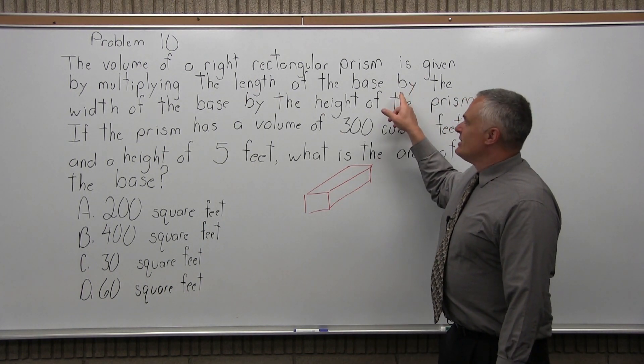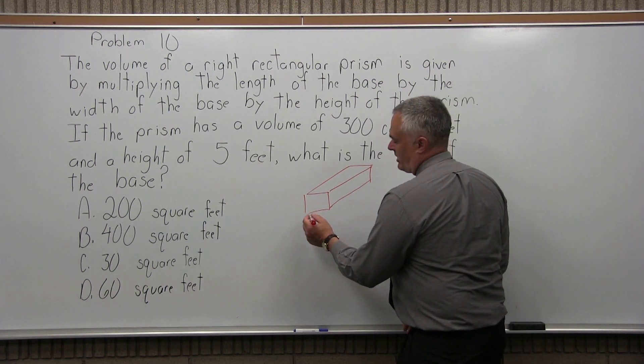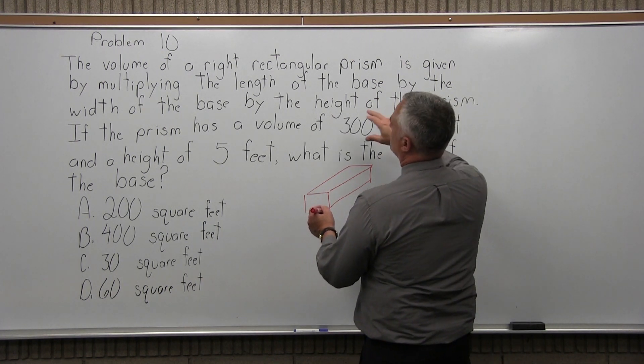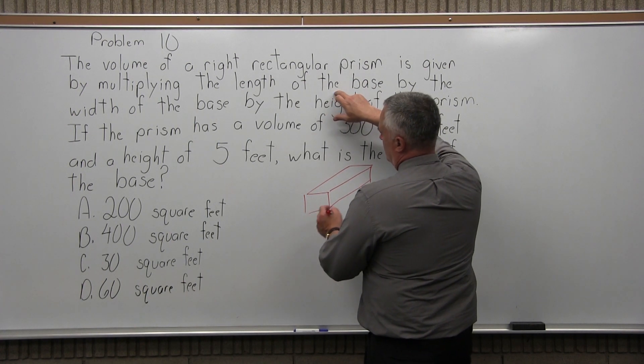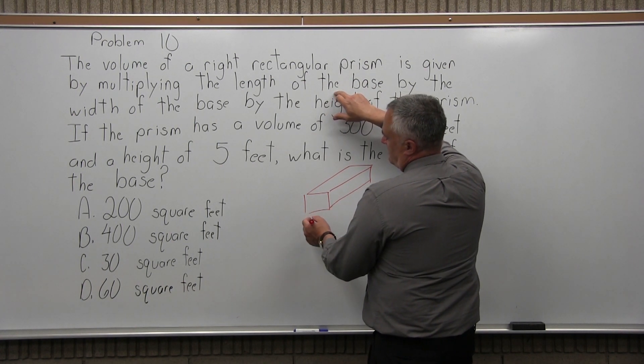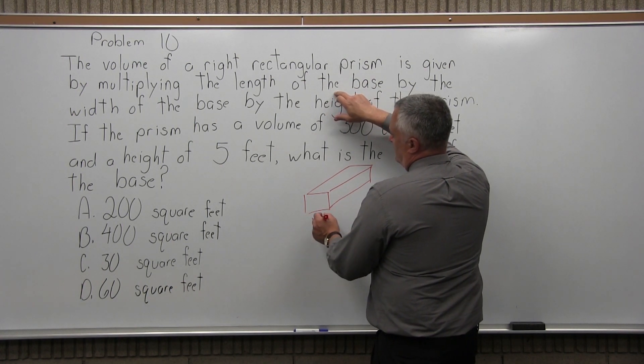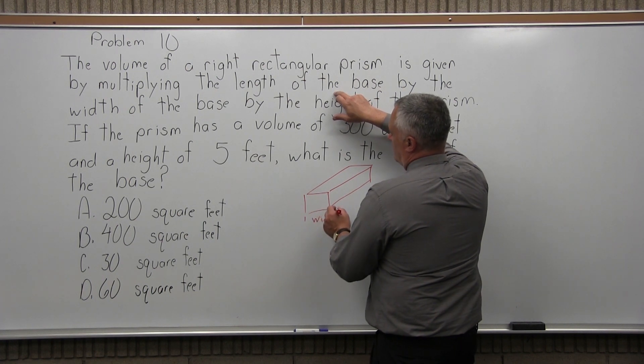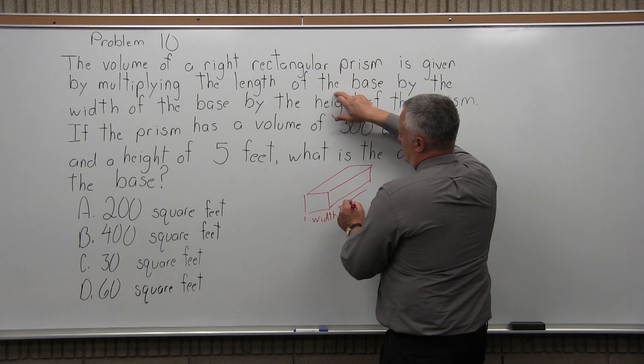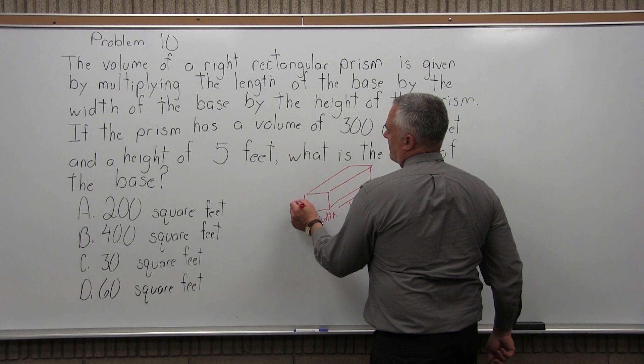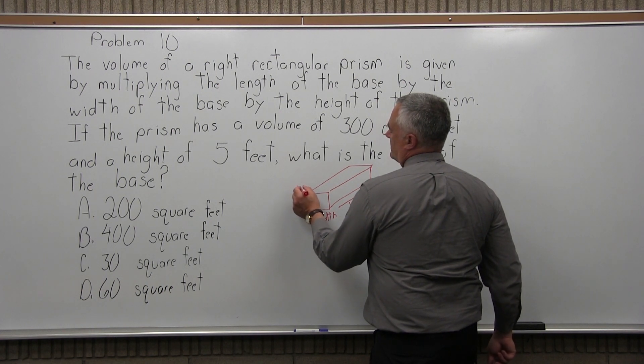You can calculate the area by multiplying the, what did they give us first? The length of the base times the width of the base. So it doesn't matter which one you call width and length. Let's say that's the width across the front from here to here. The length going this way times the height. That one's more obvious.